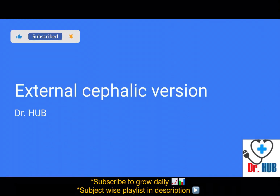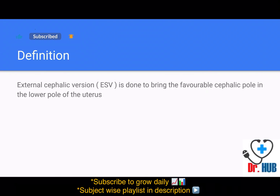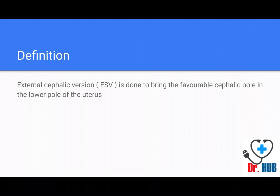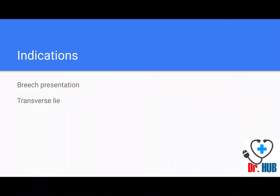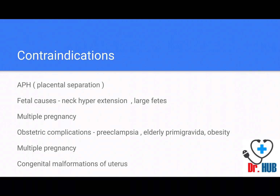External cephalic version, or ECV, is done to bring the favorable cephalic pole into the lower pole of the uterus. Indications include breech presentation and transverse lie. Now, what are the contraindications?